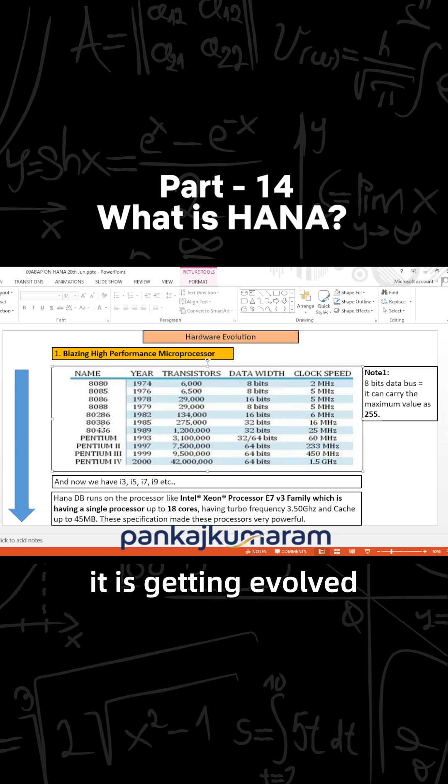That it is getting evolved. Coming to the Pentium 4, it has a 64-bit data bus and the clock speed is faster, up to gigahertz. Now we have the i3, i5, i7, and i9.